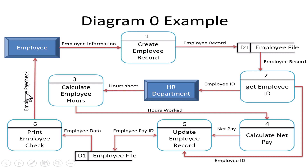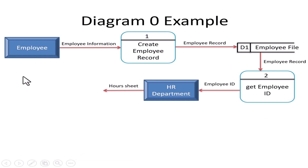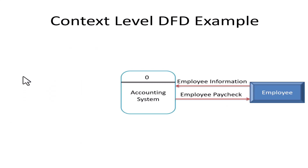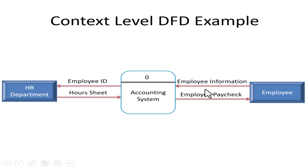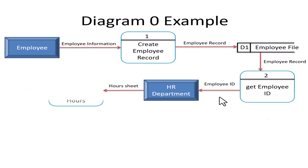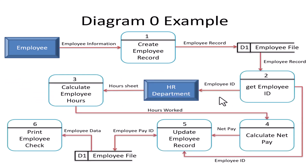Similarly, for the employee entity: the data going out is 'employee information' and the data coming in is 'employee paycheck' — this must match in both the context diagram and level zero diagram. We also apply this balance rule when making child diagrams.